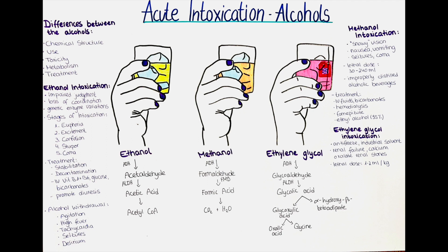Methanol, on the other hand, is a toxic alcohol that is often used as an industrial solvent and is not intended for consumption. Methanol can be found in antifreeze, windshield wiper fluid and some paints and solvents. When ingested, methanol is metabolized into formaldehyde, which is further metabolized into formic acid — a toxic substance that can cause metabolic acidosis and damage to the optic nerve, leading to blindness.